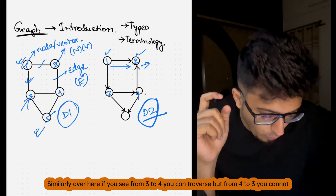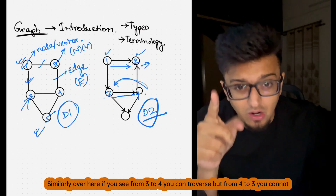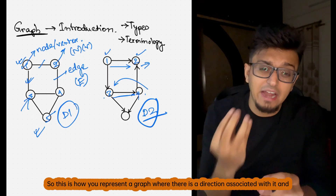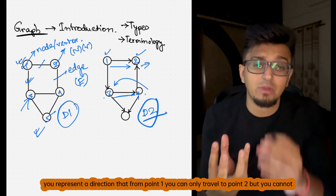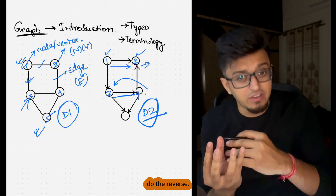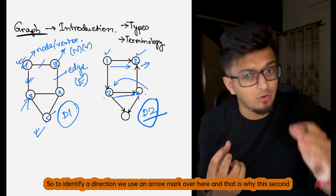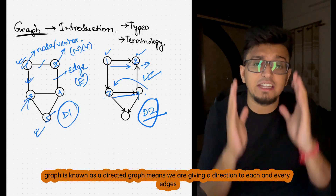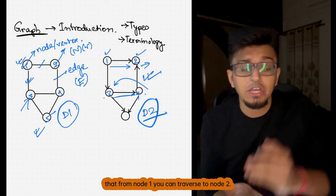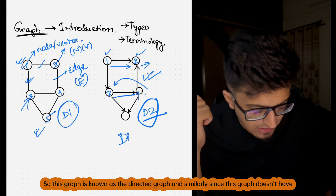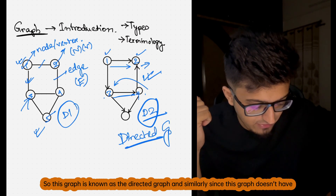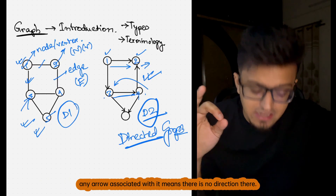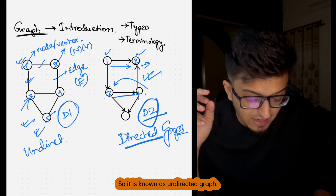From three to four you can traverse, but from four to three you cannot. This is how you represent a graph where a direction is associated with it. From point one you can only travel to point two but cannot do the reverse. To identify a direction we use an arrow mark, and that is why this second graph is known as a directed graph — we are giving a direction to each and every edge. Since the first graph doesn't have any arrow associated with it, it is known as an undirected graph.